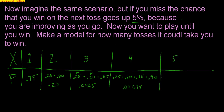For five darts: I missed the first, second, third, and fourth. With a 90% chance to make the fourth, there's a 10% chance to miss it. Now I have a 95% chance to make that fifth dart. So 0.25 times 0.20 times 0.15 times 0.10 times 0.95 equals 0.0007125.